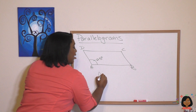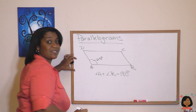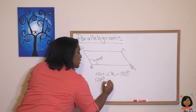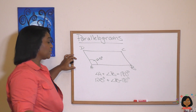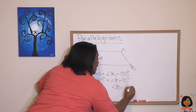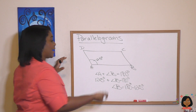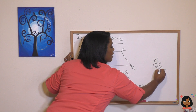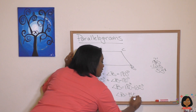So for example, angle A plus angle B equals 180 degrees. Let's substitute what we know: 125 degrees plus angle B equals 180. All we have to do is subtract: angle B equals 180 minus 125. So angle B equals 55 degrees.